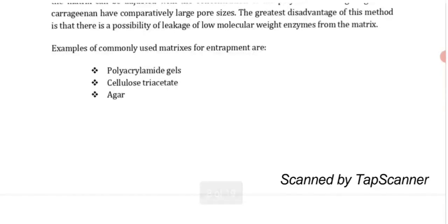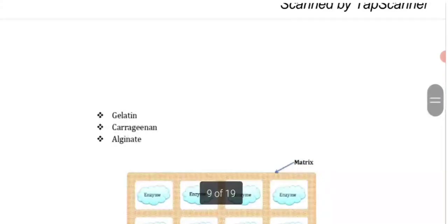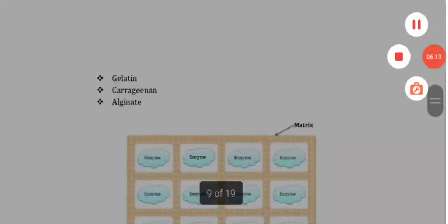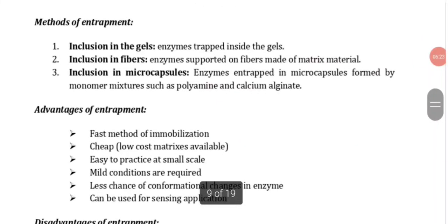The matrix can be polyacrylamide gel, cellulose triacetate, agar, gelatin and carrageenan alginate. Methods of entrapment: the first one is inclusion in gels. If enzymes are trapped in fibers, that is inclusion in fibers. Inclusion in microcapsules is when the enzymes are entrapped in microcapsules formed by monomer mixtures such as polyamine and calcium alginate.